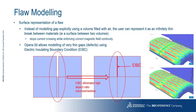If the flaw in a specimen is very small, employing a volume mesh representation can cause unnecessarily complex geometrical models. In this case, we can deploy the electric insulating boundary condition, or EIBC, in Opera 3D. Instead of modeling the gap or flaw explicitly as a small volume, it's represented as an infinitely thin break between materials, by applying a surface boundary condition between two conducting volumes.